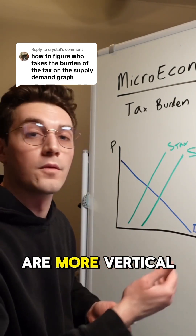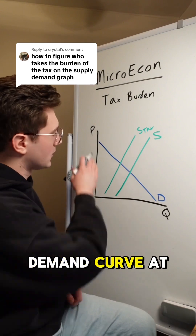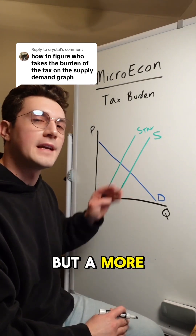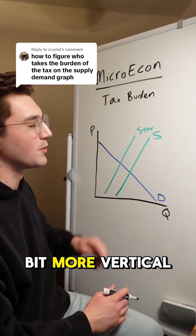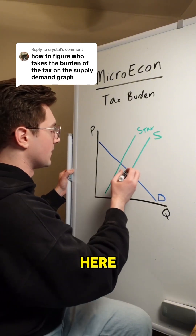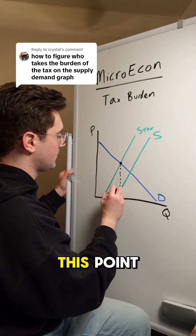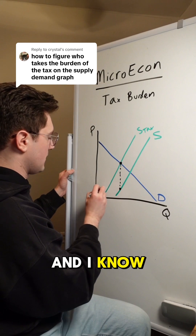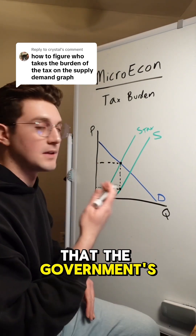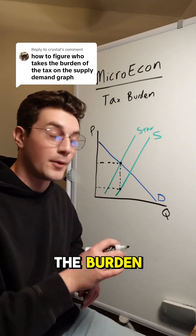Graphically, it all comes down to how inelastic supply and demand curves are — more vertical. We've got right here a unit elastic demand curve at a 45-degree angle, but a more inelastic supply curve is a little bit more vertical. First, let's visualize the tax revenue. I'm going to hit this point right here, go down, hit this point, and that rectangle right here is the total tax revenue that the government's earning from selling this good.